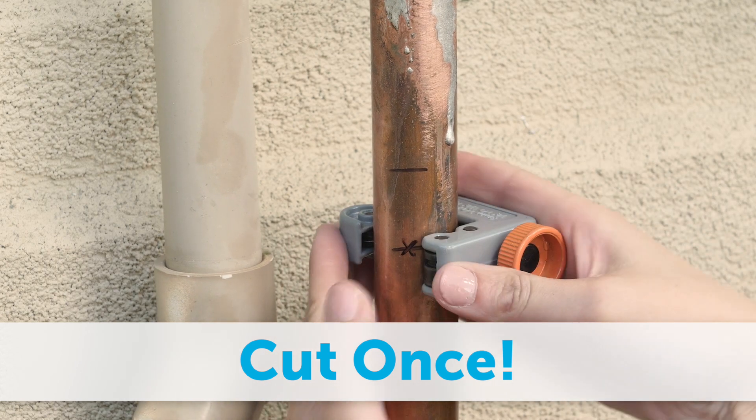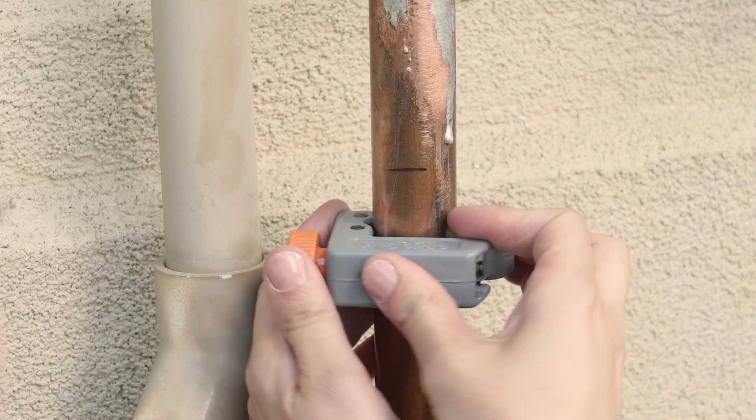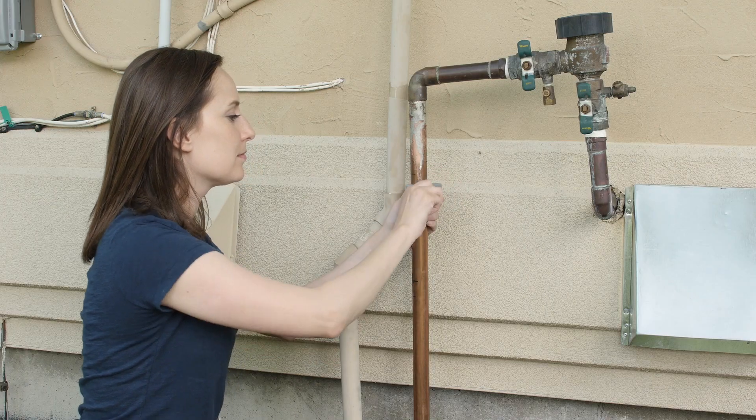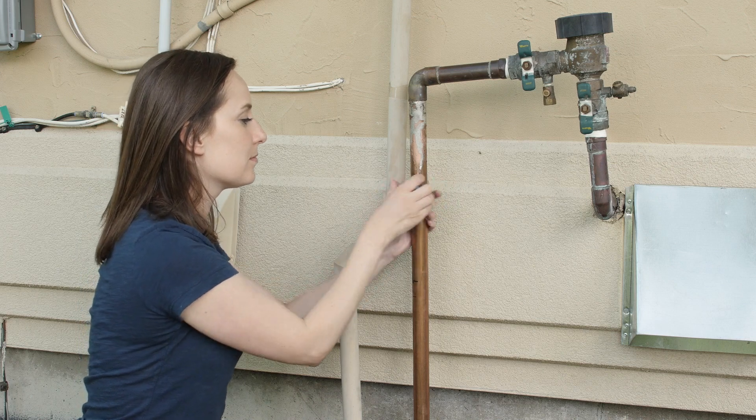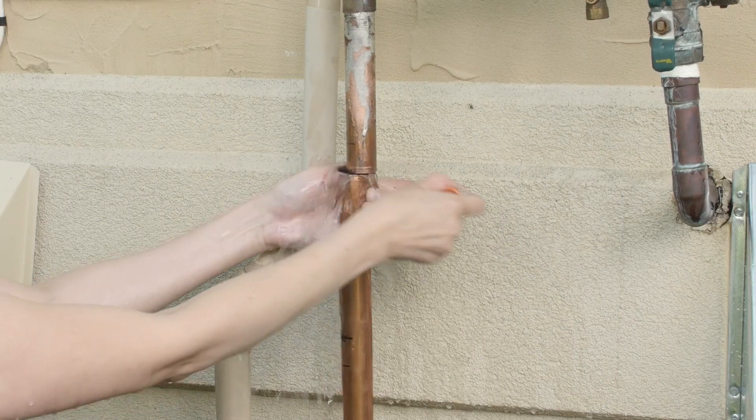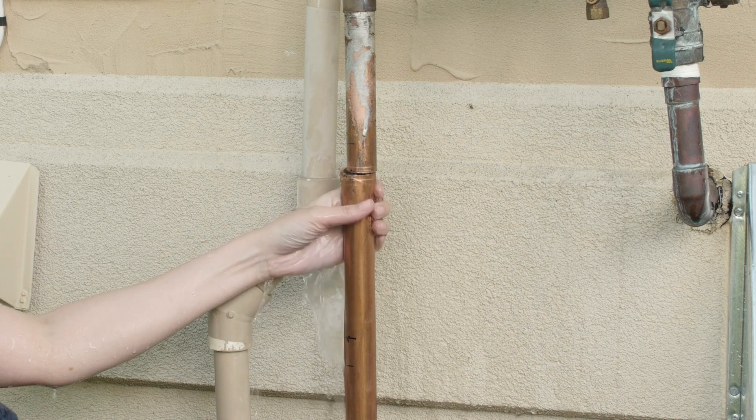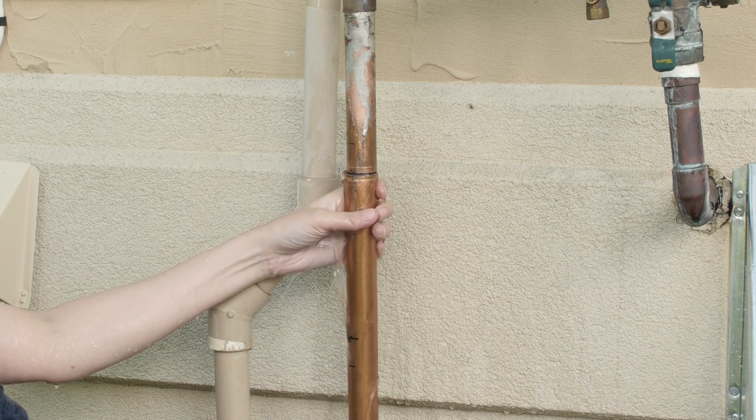Align your pipe cutter for the top cut. X marks the spot. Rotate the pipe cutter, tightening every few rotations. There might be residual water pressure in your system. Don't be surprised if some water comes out as you complete the cut.